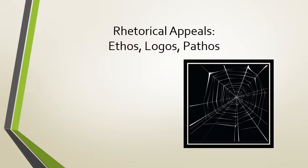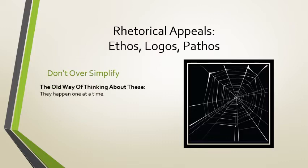It gets much more complex when we start to think about the rhetorical appeals as operating in unison. So let's start with not oversimplifying ethos, logos, and pathos as simply operating separately all the time. The old way of thinking about these is that they happen one at a time — the author is doing ethos here, or appealing to pathos there, or here is where the author's logos is. It's an easy way to introduce people to the concept, but thinking about all three at once can be difficult.